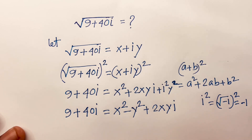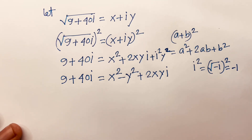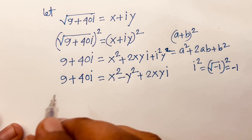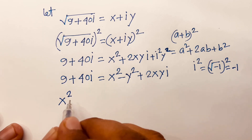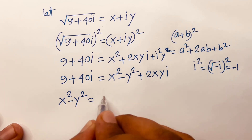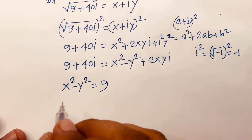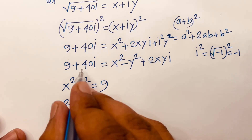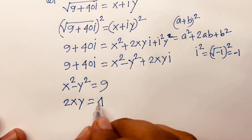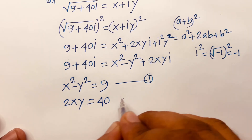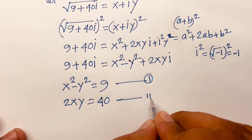Then if I compare the real part and imaginary part, I can say the real part gives x² minus y² is equal to 9, and the imaginary part gives 2xy is equal to 40. This is our first equation and this is our second equation.